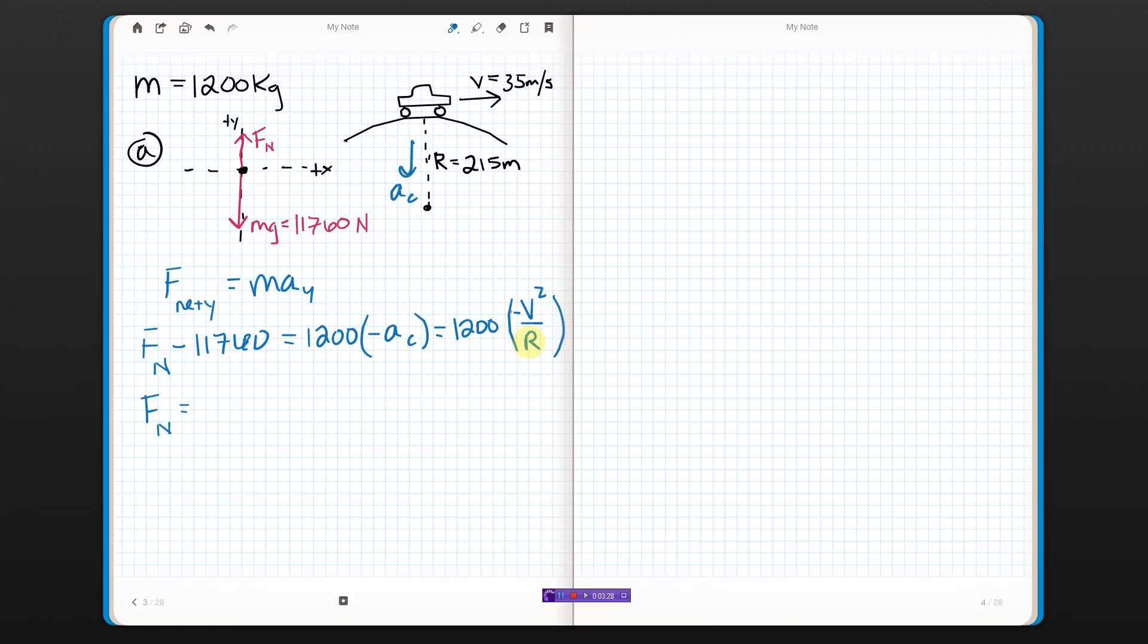If we solve for Fn, we're going to get Fn equals 11,760 positive, and then we have negative 1200 times v squared over r, which is v equals 35 meters per second squared.